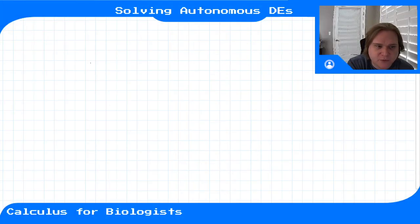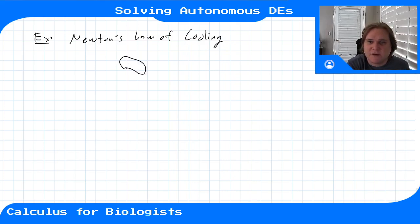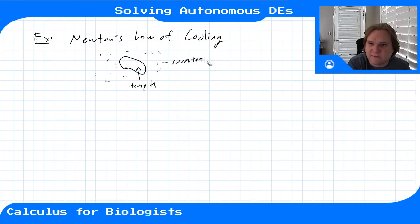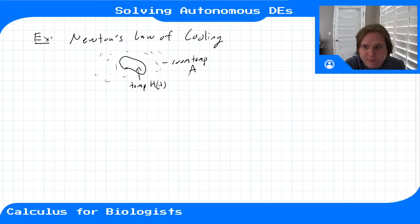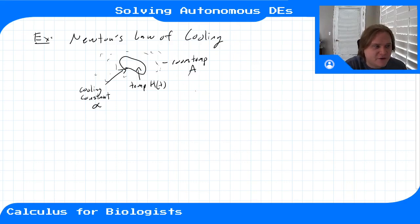Another example system we can solve using the same technique is Newton's law of cooling. We have an object with temperature H sitting in a room at temperature a, where a is a constant. The object doesn't generate or absorb enough heat to change the room temperature, but the room temperature will change the object's temperature. The object has a cooling constant alpha that determines how fast or slow it's affected by the room temperature.